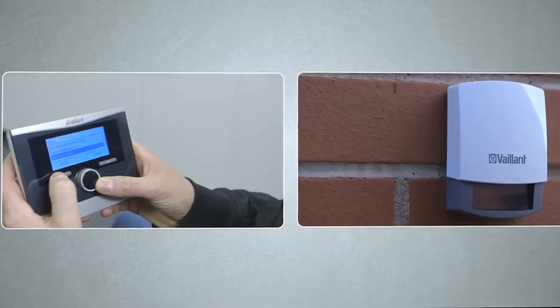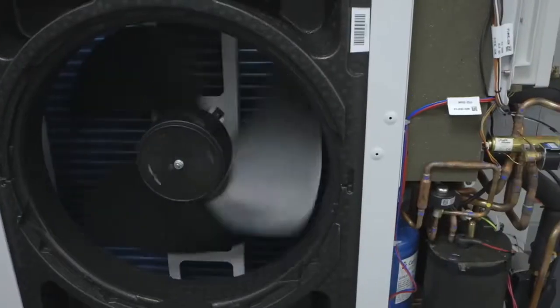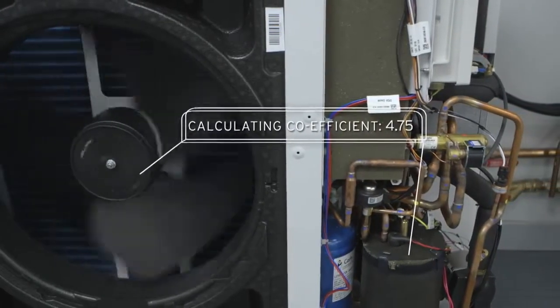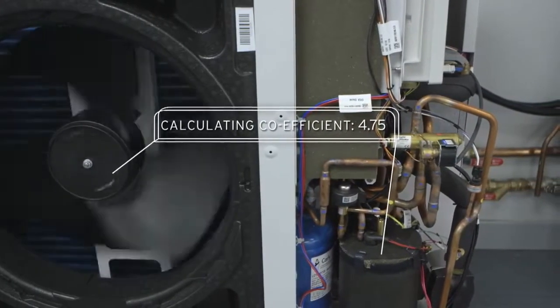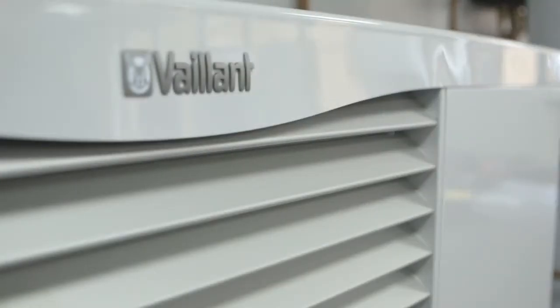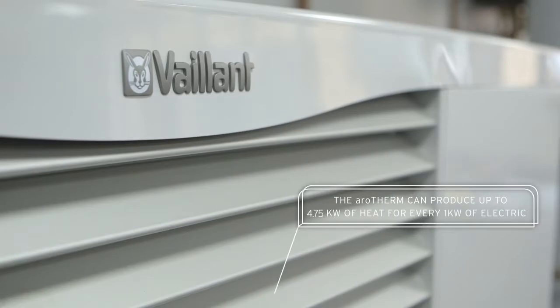All of which is very clever indeed, but not as clever as the Arotherm's coefficient of performance. Or, putting it more simply, how well Arotherm turns the electricity it runs on into heat for your home. For every one kilowatt of electrical energy used, Arotherm produces up to 4.75 kilowatts of heat energy.